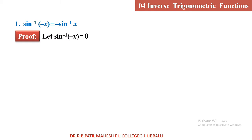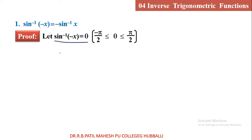Let us consider the LHS: sin inverse of minus x equal to theta. You know that theta lies between the range of sin inverse, that is minus pi by 2 to plus pi by 2. I have taken sin inverse of minus x equal to theta. Taking sin inverse to the right side, minus x is equal to sin theta.